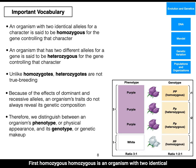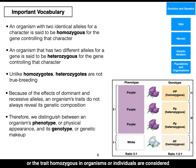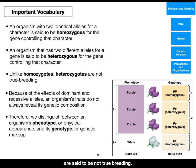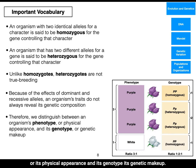Let's review some important vocabulary that will be essential for your knowledge of genetics. First, homozygous — an organism with two identical alleles for a character or trait. An organism that has two different alleles for a gene is said to be heterozygous for the gene controlling the character or trait. Homozygous organisms are considered to be true breeding. Heterozygous individuals are said to be not true breeding. Because of the effects of dominant and recessive alleles, an organism's traits do not always reveal its genetic composition. Because of this, we distinguish between an organism's phenotype, its physical appearance, and its genotype, its genetic makeup.